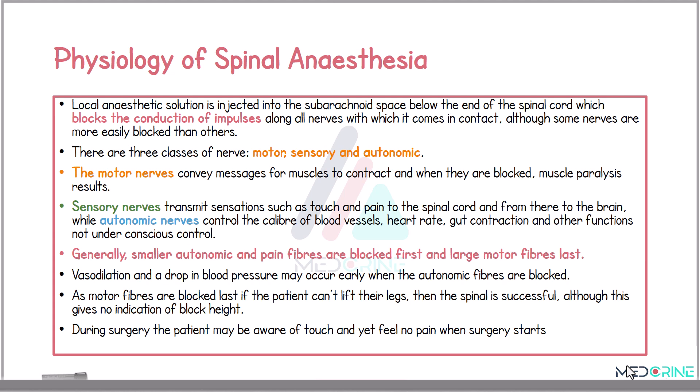In spinal anesthesia, smaller autonomic and pain fibers are blocked first and then larger motor fibers are blocked last. Vasodilation and a drop in blood pressure may occur early when the autonomic fibers are blocked. As the motor fibers are blocked last, if the patient cannot lift their legs, the spinal is considered successful, although this gives no indication of the block height. During surgery, the patient may be aware of touch and yet have no sensation of pain when surgery starts.